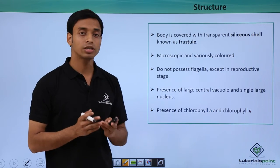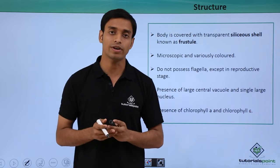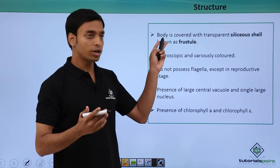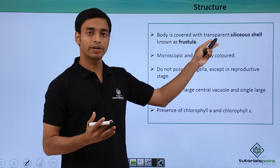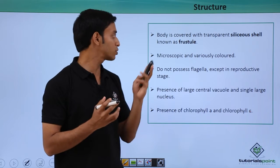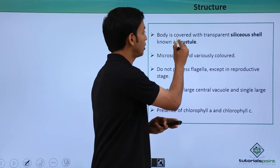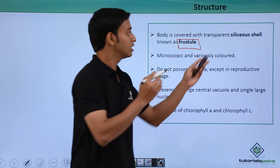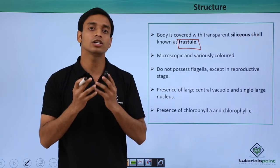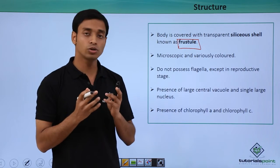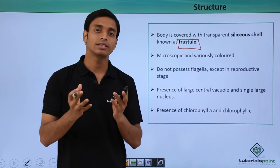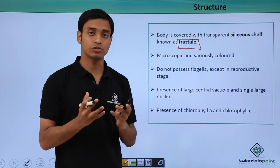Now let's look at the structure of these chrysophytes. Their body is covered with a transparent siliceous shell-type structure called a frustule. This siliceous shell structure covers the body of the chrysophytes.